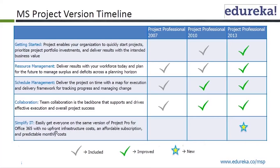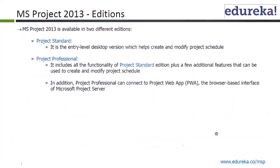What is new in 2013? The new feature is Simplify IT — easily get everyone on the same version of Project Professional for Office 365 with no upfront infrastructure cost and an affordable subscription with predictable monthly cost. It is a pay-per-use kind of thing with Office 365. There is no upfront infrastructure cost, and if you are subscribing month on month, you know what the cost is going to be if you want to use it across the web. That's the advantage of Simplify IT, and that is the new feature added in 2013.